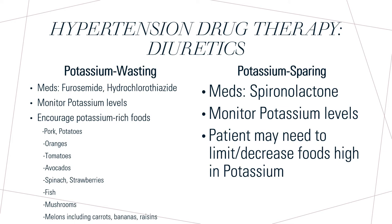Loop diuretic medications include furosemide and hydrochlorothiazide. While taking these medications, it is encouraged to include potassium-rich foods in the diet, such as pork, potatoes, oranges, tomatoes, avocados, spinach, strawberries, fish, mushrooms, melons, carrots, bananas, and raisins, because these medications excrete potassium. The potassium-sparing medication is spironolactone. Patients on this type of diuretic need to decrease or limit foods high in potassium, including salt substitutes, which are also high in potassium.